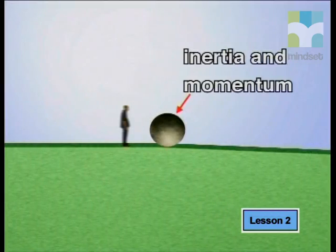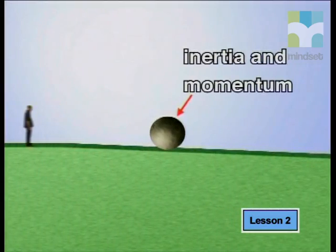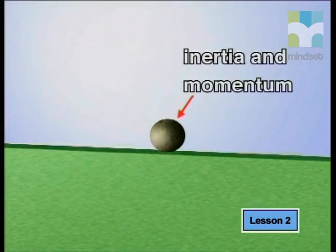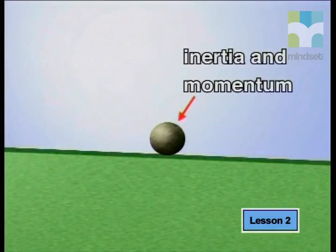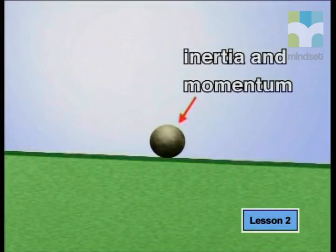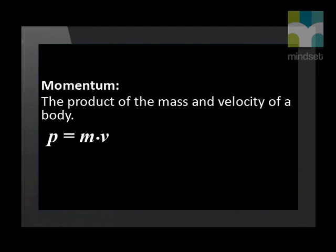When a resultant force overcomes the inertia of a body and sets it in motion, the body acquires another property. This property of a body in motion is called momentum, and it is in exploring momentum that we will find the answers to the questions asked at the beginning of this lesson. Momentum is defined as the product of the mass and velocity of a body. The formula is: p equals m times v, where p represents momentum, m represents mass, and v represents velocity. Because velocity is a vector quantity with a certain magnitude and direction, momentum is also a vector quantity.